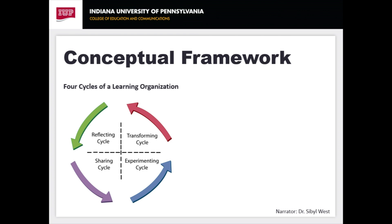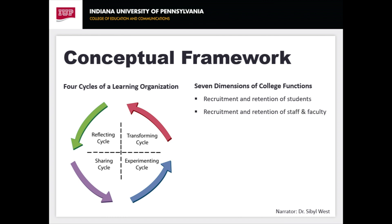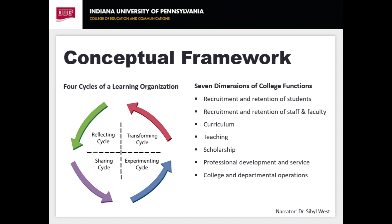The action plan is designed to operate across multiple levels as well as across various dimensions of the college's functions. These dimensions include recruitment and retention of students, recruitment and retention of staff and faculty, curriculum, teaching, scholarship, professional development and service, and college and departmental operations.